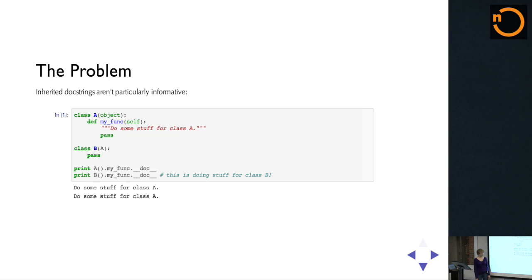The reason why I started playing around with metaclasses was I was trying to use Nose to run some test suites. I ran into this problem where Nose will print out the docstring of your methods as it's running them. These docstrings aren't necessarily particularly informative. So if you have some class A with a function called myfunc that has some docstring, and then another class that inherits from A, you look at the docstring for both of those functions and they're the same docstring.